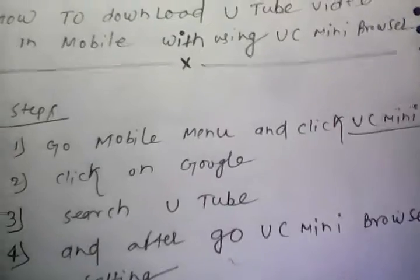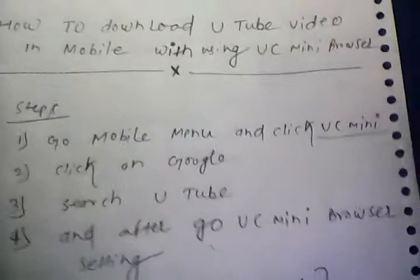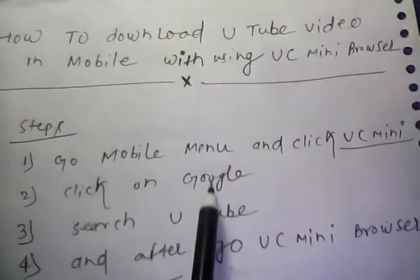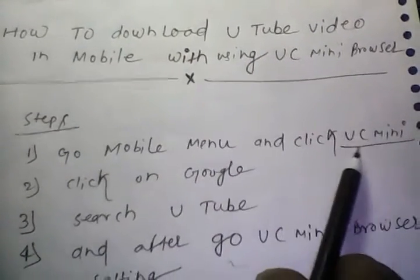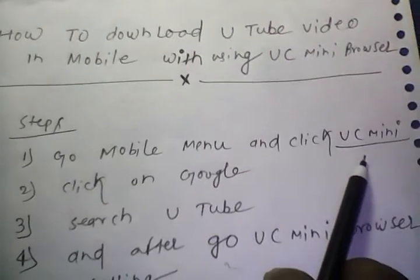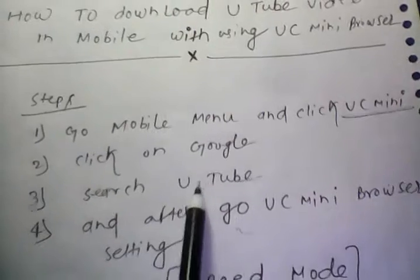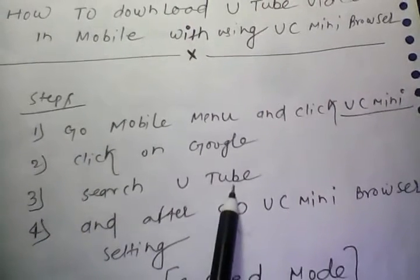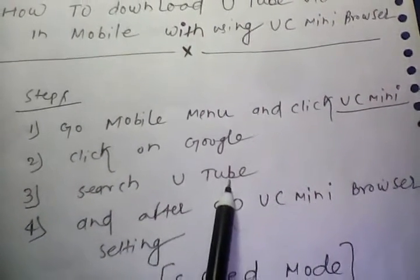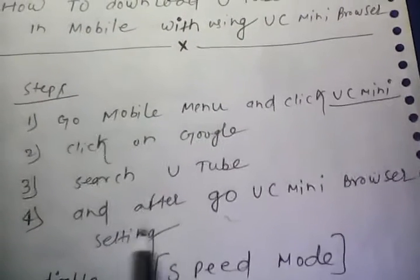Here are the steps. First, go to the mobile menu and click on UC Mini. This is the software you need to install. Then click on Google search, search YouTube, and click on a video.